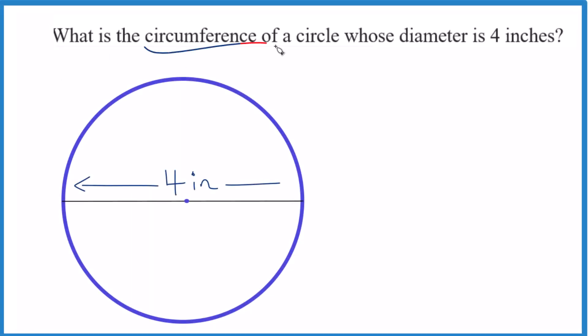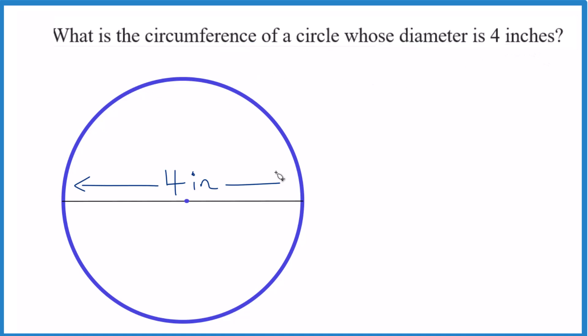Let's find the circumference of a circle whose diameter is four inches. The circumference is the distance around the outside of the circle, and we have a formula for that.